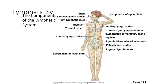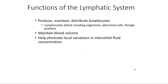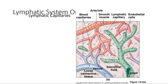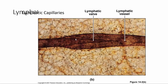The function of the lymphatic system is to produce, maintain, and distribute lymphocytes. Lymphocytes attack invading organisms, abnormal cells, and foreign proteins. The lymphatic system also maintains blood volume and helps eliminate local variations in interstitial fluid concentration. Lymphatic capillaries are part of the microcirculatory bed, including lymphatic valves, and connect to lymphatic vessels.